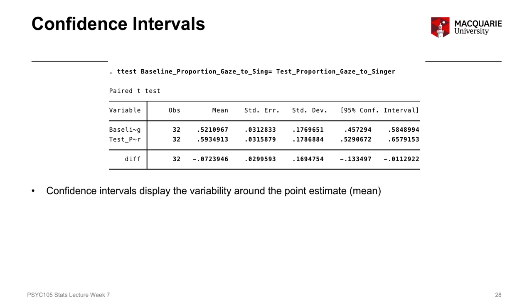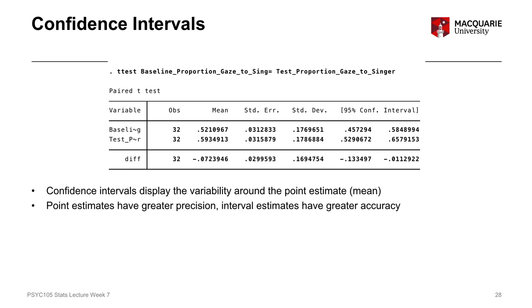If I was to predict that the mean baseline proportion of gaze in the wider population from which the sample was drawn equals 0.52, just based on what our sample mean score is, then that's possible. But it's pretty unlikely because of how precise that particular number is. Point estimates have a lot of precision in terms of predicting something, but they're probably going to be wrong, or at least wrong to a certain extent, because they're so specific.